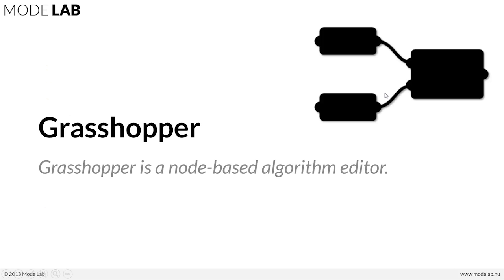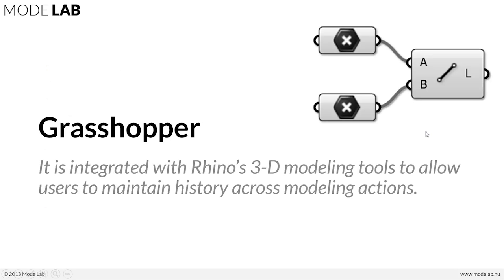As a recap of Grasshopper — where it is, where it started, and where it's going — Grasshopper by definition is a node-based algorithm editor. It is integrated with Rhino's 3D modeling tools to allow users to maintain history across modeling actions. So when we say point A and point B will be connected via a line, this is the kind of diagram we draw in order to define that set of history elements across the modeling actions.